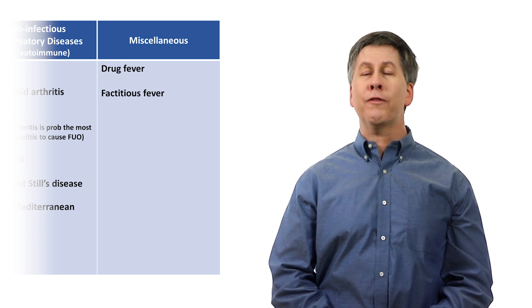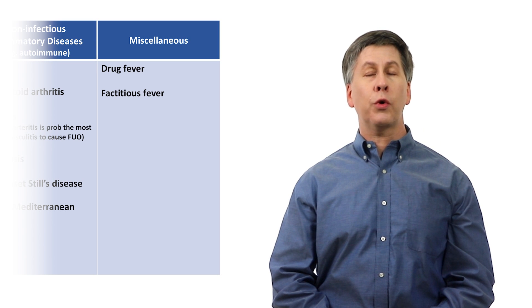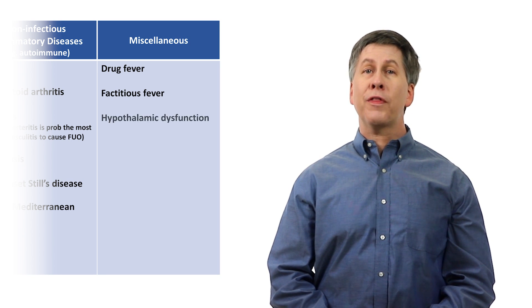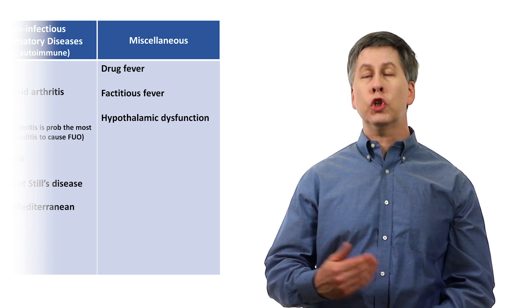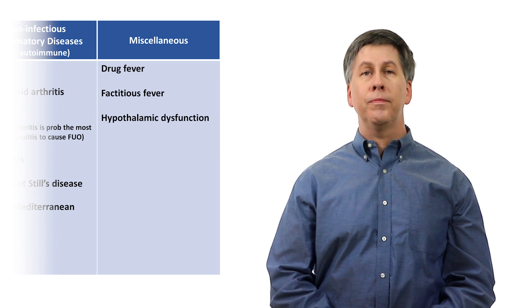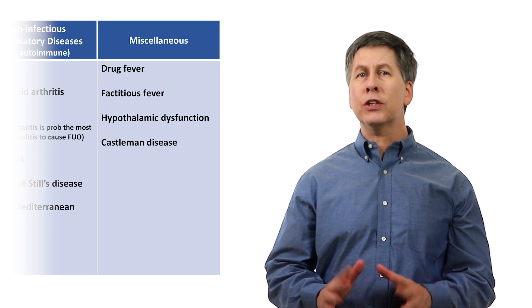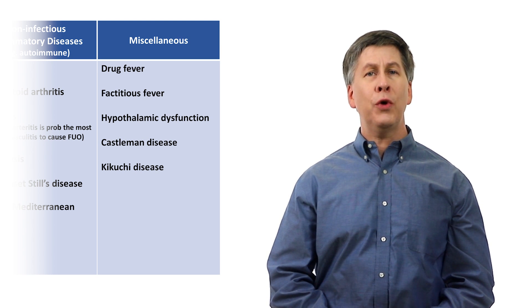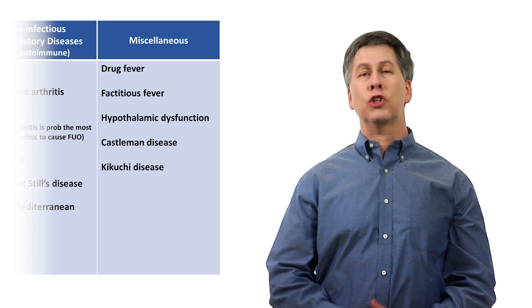Factitious fever is a form of either factitious disorder or malingering, in which the patient is deliberately causing the fever either by manipulating the temperature-recording device or by secretly injecting themselves with something to trigger it, such as bacteria. The hypothalamus in the brain is the location of our temperature regulation center. Dysfunction of the hypothalamus caused by either neurosurgery or compression by an intracranial mass can cause abnormalities of body temperature. Castleman disease is a group of similar lymphoproliferative diseases, which are not technically cancer, but which share features with lymphoma. And Kikuchi disease is a necrotizing lymphadenitis of unknown etiology, most commonly affecting people under the age of 40 and manifesting as fever and cervical lymphadenopathy.